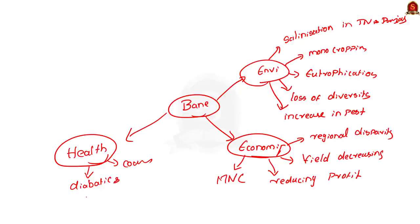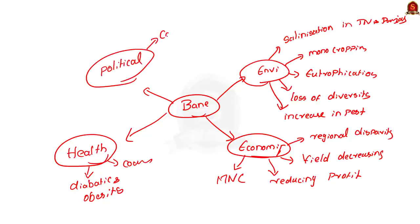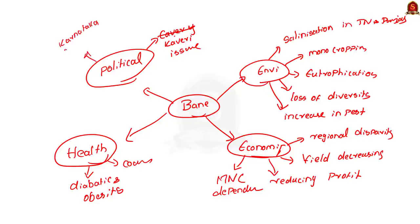Finally, you can write about the political aspect. You can mention the Tamil Nadu–Karnataka issue. Tamil Nadu is mostly a semi-arid region, but it benefited a lot from the Green Revolution, and its agricultural sector overtook that of Karnataka. Most of Tamil Nadu's agricultural lands are directly or indirectly dependent on the Kaveri River. Earlier there was no conflict, but Karnataka has also developed significantly after the 1991 liberalization process, increasing its water needs. Tamil Nadu also needs water for its farmers, leading to the conflict. So the ill-advised implementation of the rice-wheat system has even led to political conflicts.